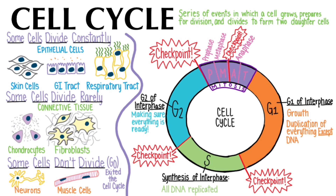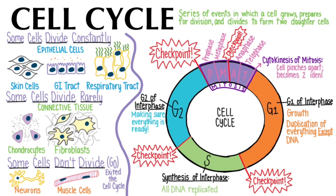Anaphase is when the spindle fibers pull half of the chromosomes to either side of the cell, and telophase is when the chromosomes begin to uncoil a bit and get surrounded by new nuclear membranes. The cell visibly begins to pinch down and separate into two cells at this point. However, the actual final part of mitosis is called cytokinesis, during which the cell entirely pinches apart, forming two identical daughter cells.